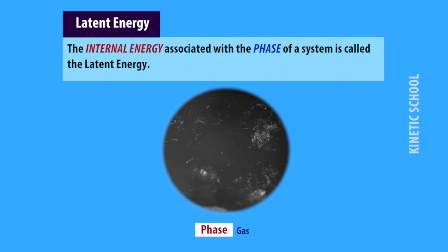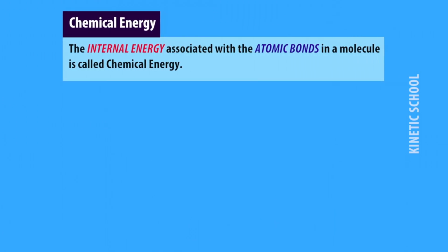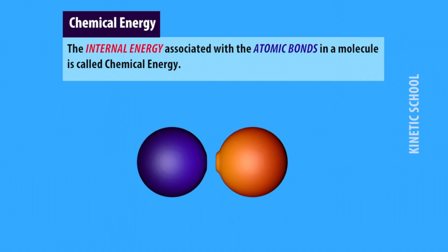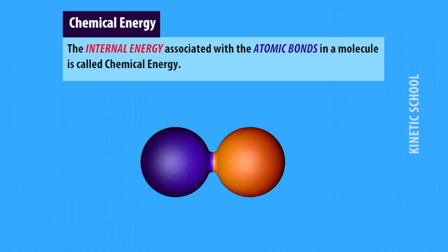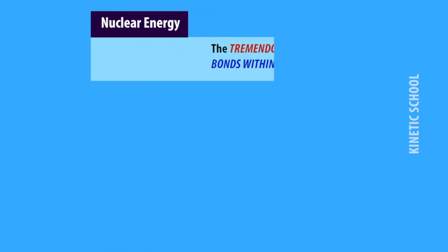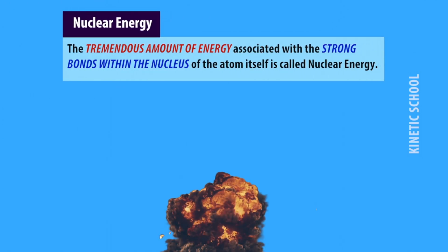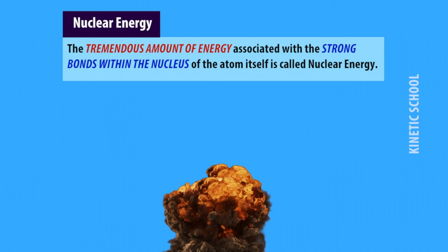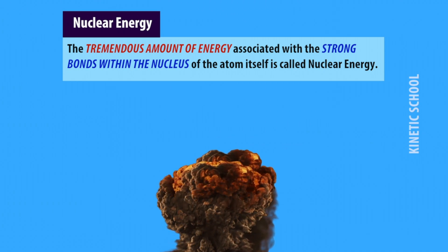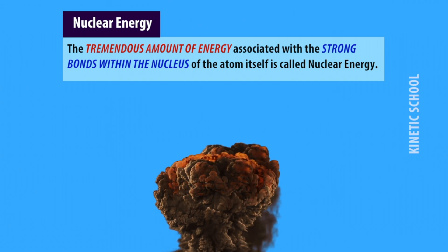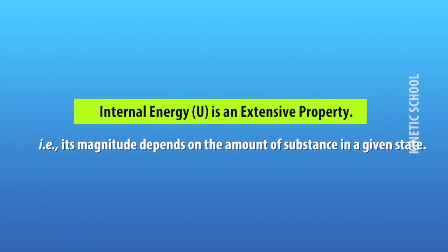Latent energy is the internal energy associated with the phase of a system. Chemical energy is the internal energy associated with the atomic bonds in a molecule. Nuclear energy is the tremendous amount of energy associated with the strong bonds within the nucleus of the atom itself.